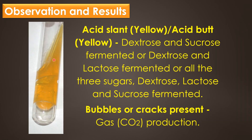This image shows acid slant and acid butt, that is yellow slant and yellow butt, indicating dextrose and sucrose fermented, or dextrose and lactose fermented, or all three sugars — dextrose, lactose, and sucrose — fermented. Bubbles or cracks are also present in this image, representing gas or carbon dioxide production.